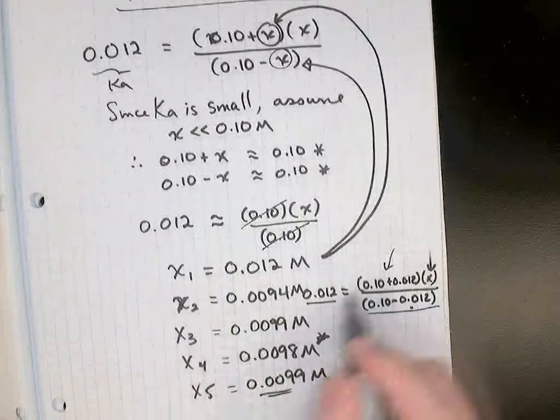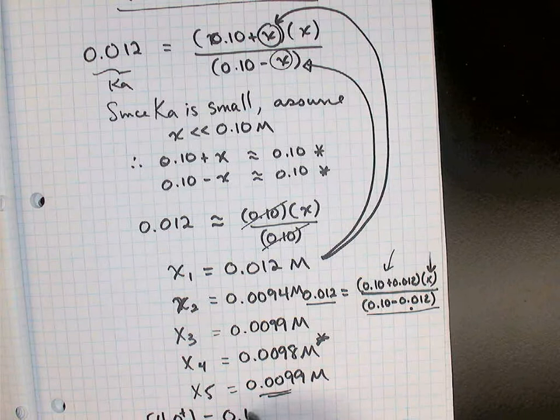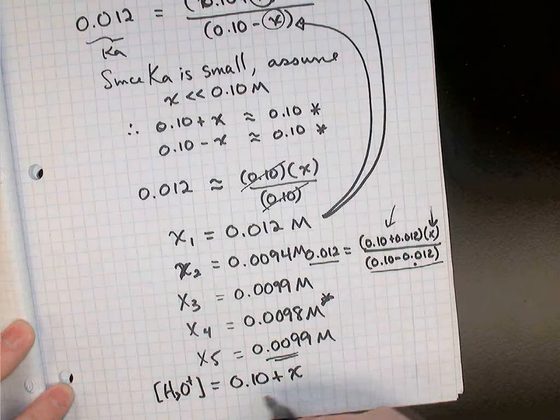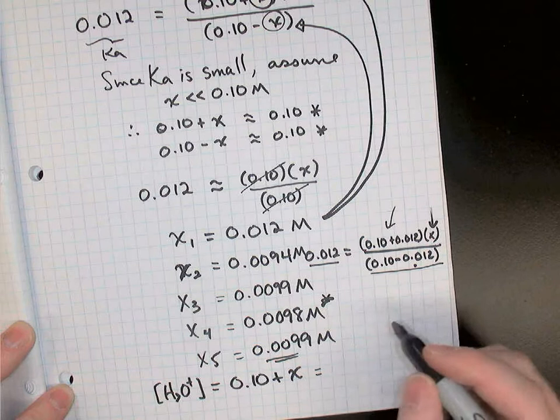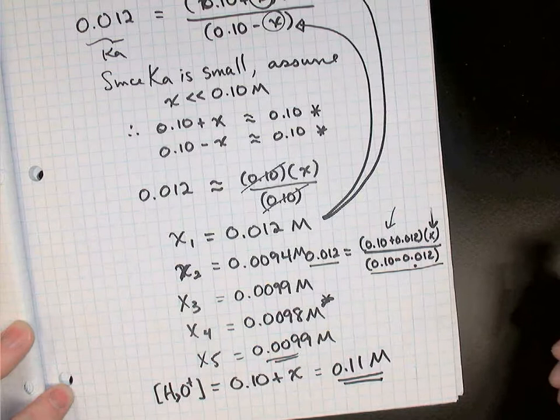So our answer, either one of those is going to be acceptable. Now that is the answer for X. If we want to now find the concentration of hydronium, that's actually 0.1 plus X, right? So we have to add 0.10, it's the hydronium from step one, to the X value that we just got. So 0.10 plus 0.0099 is 0.1099, or 0.11 molarity.